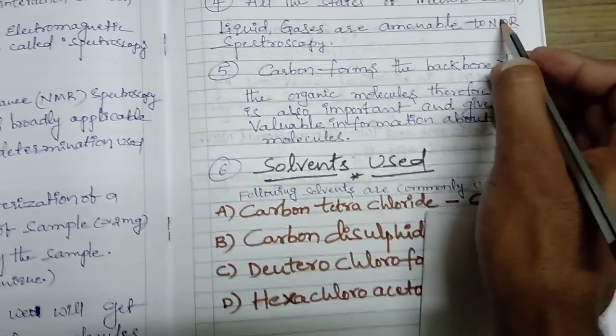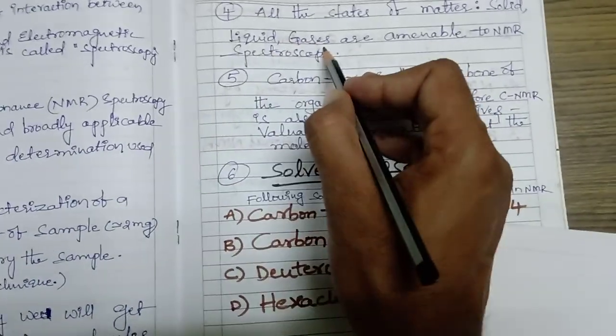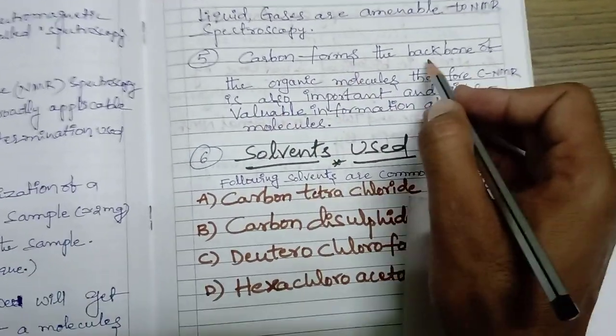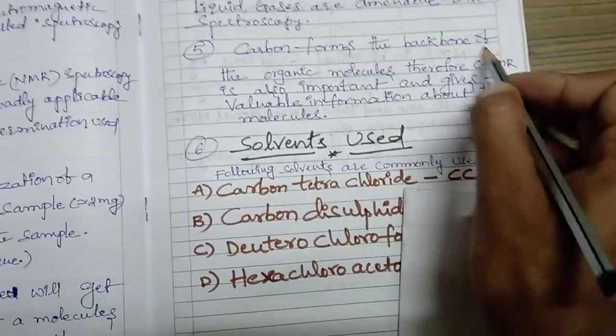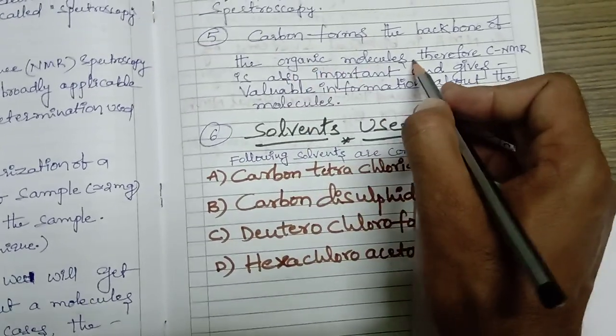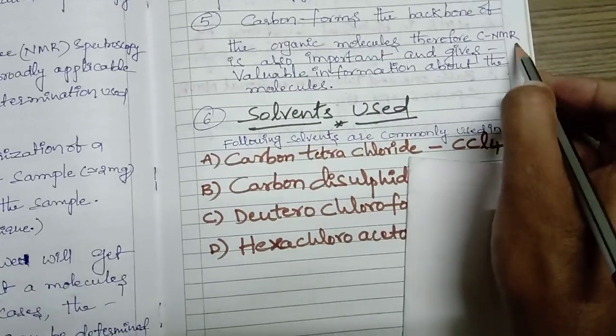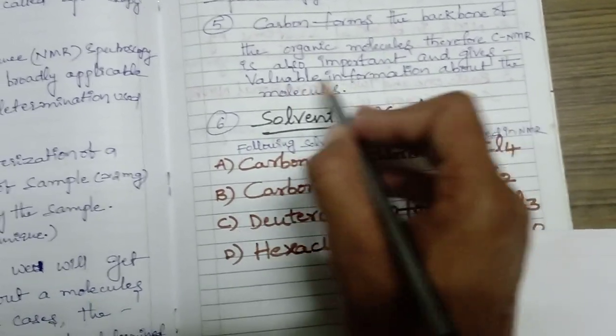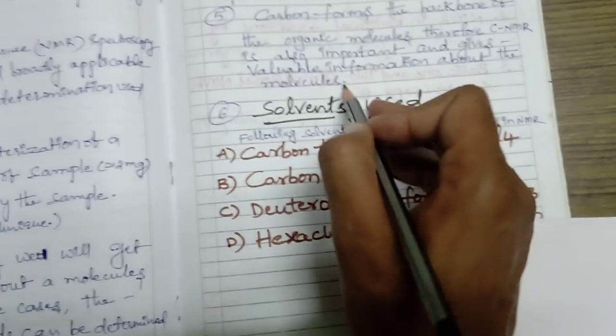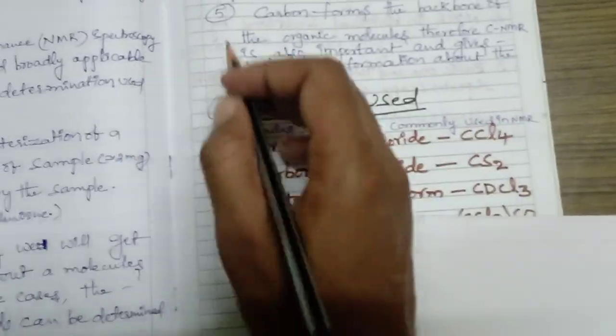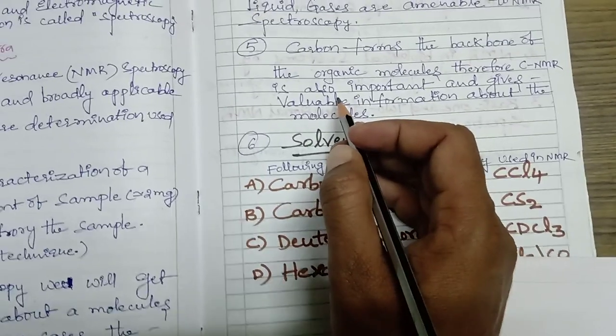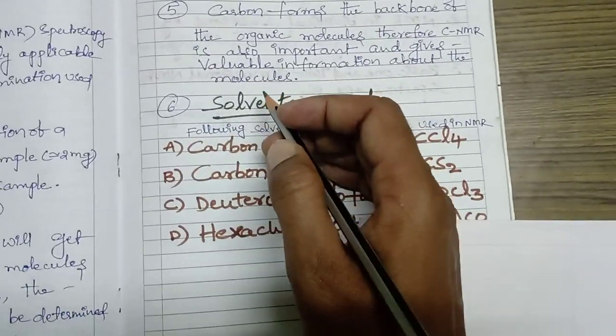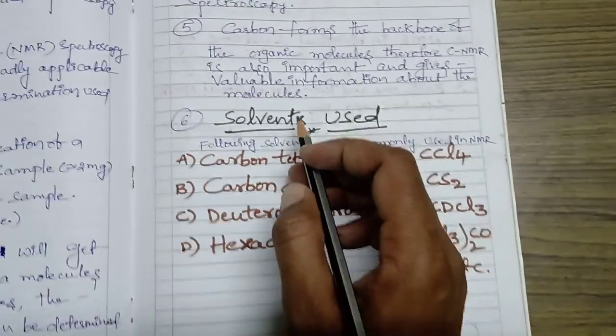Fifth point, carbon forms the backbone of organic molecules, therefore CNMR is also important and provides valuable information about the molecules. These are the five points I wanted to introduce about NMR spectroscopy. Let us go for the next lectures in detail about NMR spectroscopy.